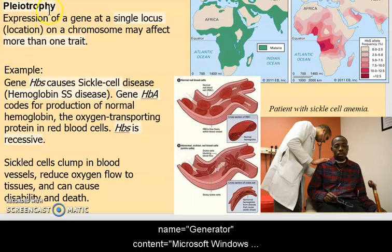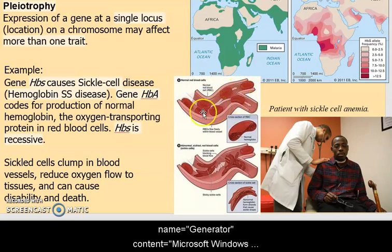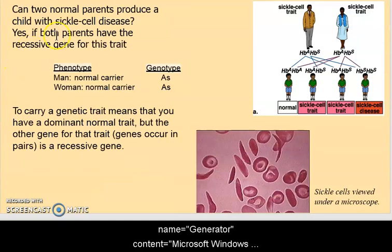Pleiotropy is a condition where one gene may affect more than one trait. A good example is sickle cell disease — the hemoglobin SS gene, sometimes shortened to HbS. Normally the gene controls for a plate-shaped red blood cell that can fold and flow into our blood vessels smoothly. But the HbS recessive gene causes sickle-shaped cells. We tend to see it in African Americans, and there's a good reason for that.